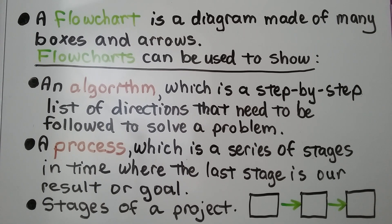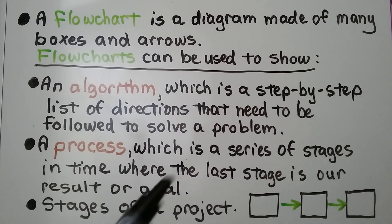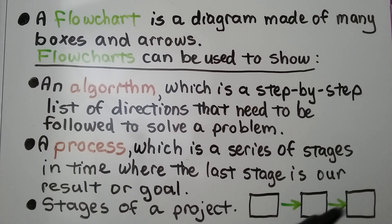Flowcharts can be used to show a process, which is a series of stages in time where the last stage is our result or goal. Flowcharts can also be used to show stages of a project. We have boxes with arrows showing the stages or the steps.